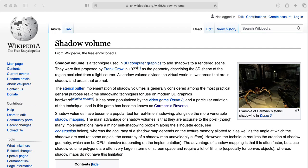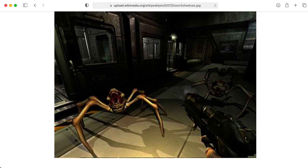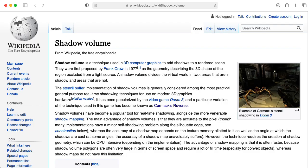Stencil buffers can be used for all kinds of things, including handling shadows using a technique called shadow volumes. Unfortunately, shadow volumes kind of went out of style. They were used in the game engine for Doom 3, and they are kind of nice because they give you nice, well-defined shadow boundaries.